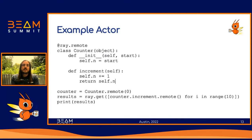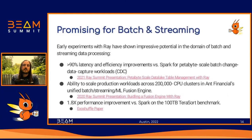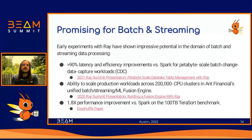The last reason we chose Ray as our underlying distributed compute framework is because early experiments have shown it to be very promising for batch and stream data processing. For example, my 2021 Ray Summit presentation showed over 90% latency and efficiency improvement versus Spark on petabyte-scale batch change data capture workloads running against an Amazon internal data catalog. Ant Financial's 2020 Ray Summit presentation demonstrated using Ray to scale mixed-purpose batch, streaming, and ML workloads across massive 200,000 CPU clusters. Finally, the Exoshuffle paper shows Ray's potential for more generic data processing workloads, including a notable 1.8x performance improvement versus Spark on the 100 terabyte TeraSort benchmark.